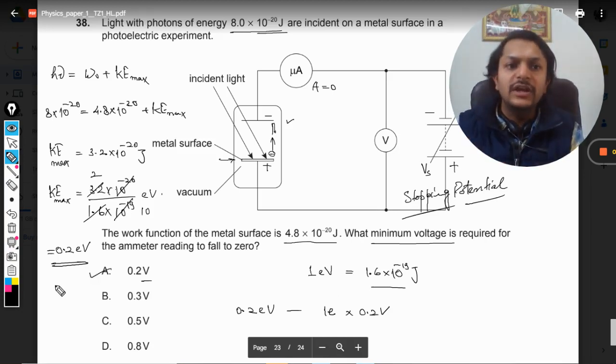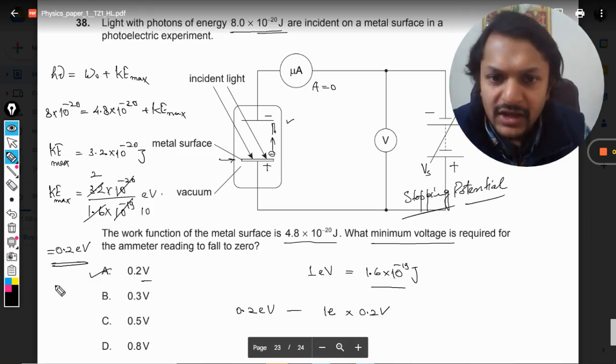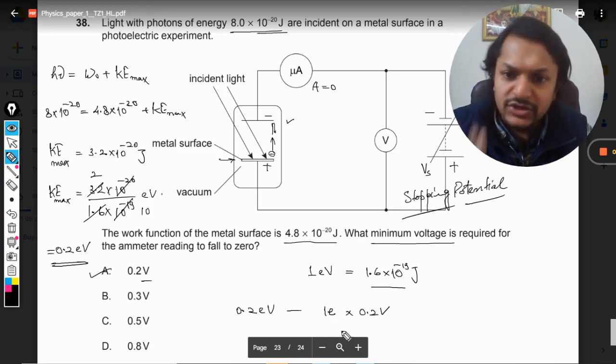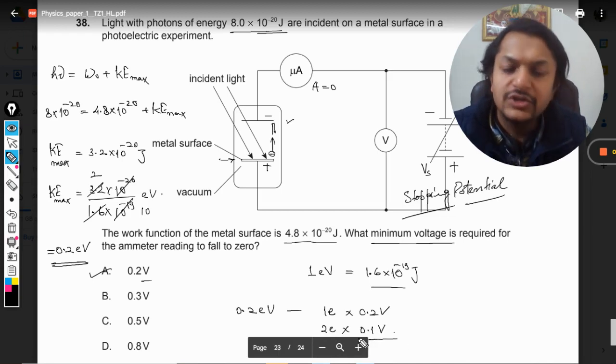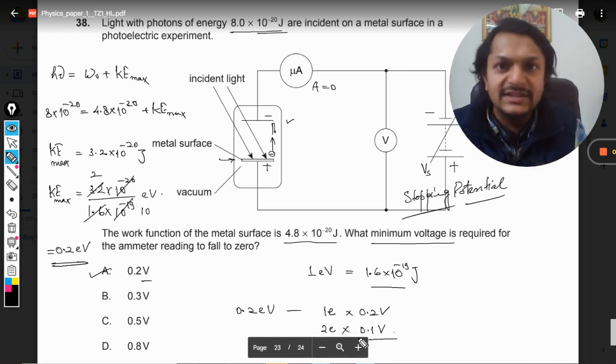Okay, so if there are two electrons, let us say, you would be needing 0.1 volt, so our answer would be 0.1 volt. But in this case, we would be considering only one electron—that is why the answer is A.